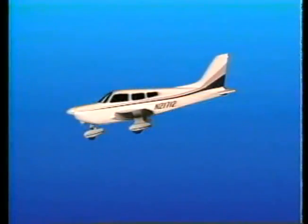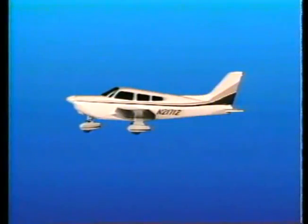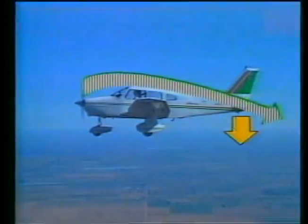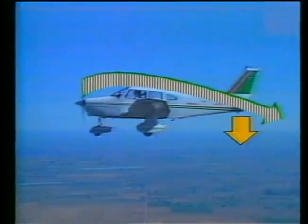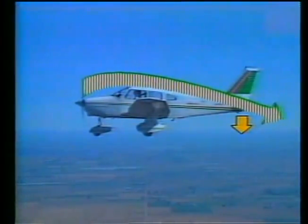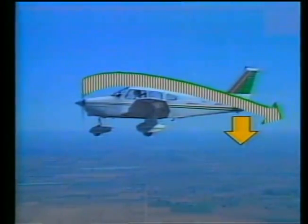Similarly, if the airplane pitches nose down, the negative angle of attack and in turn the tail down force increases, tending to return the airplane toward its trimmed attitude. Additional downward forces are imposed on the horizontal surfaces by the downwash created by the propeller and wings. This means that as you reduce power, the tail down force decreases, allowing the nose to pitch down. Conversely, when you add power, the tail down force increases and the nose tends to pitch up.